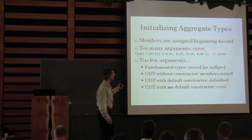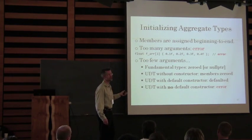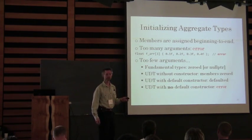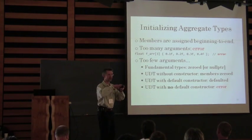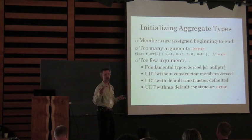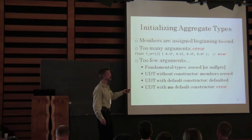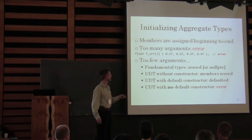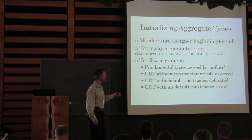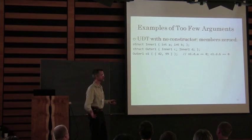If you give too many arguments, the compiler will yell at you. If you have too few arguments, the compiler tries to make something up. If you have too few arguments on a fundamental type, they get default-initialized — zeros or null pointers. If you have a user-defined type that's an aggregate, the members will get zeroed. If you have a user-defined type with a default constructor, then the default constructor is called. If you have a user-defined type with no default constructor or a deleted default constructor, then you have an error.